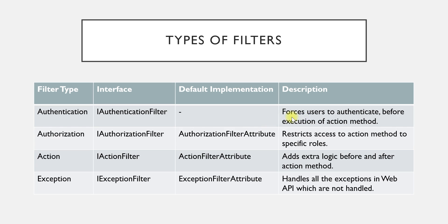The first filter is the authentication filter. It forces the user to authenticate before execution of any action method — until you authenticate, you can't use the Web API. You must provide your credentials, and only if they are valid can you use the action methods. There is no default implementation available for authentication filter, so you have to create your own by inheriting the Attribute class and implementing IAuthenticationFilter.